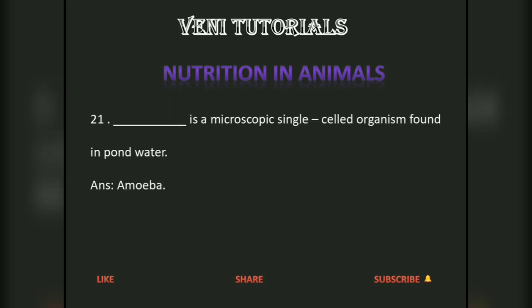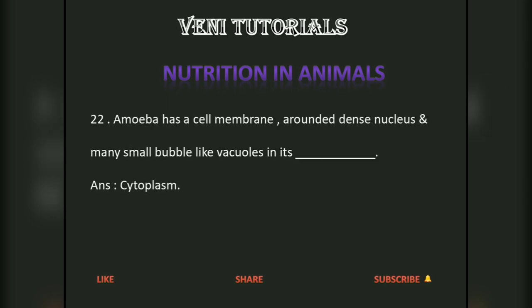Amoeba is a microscopic single-celled organism found in pond water. It has a cell membrane around a dense nucleus and many small bubble-like vacuoles in its cytoplasm.